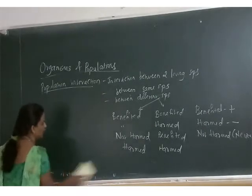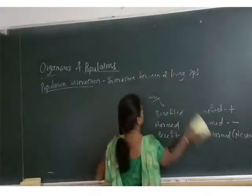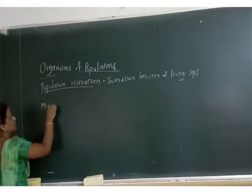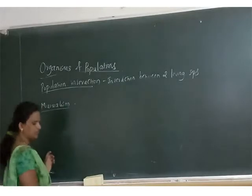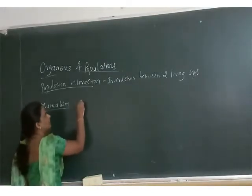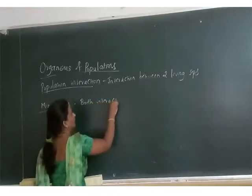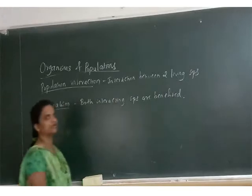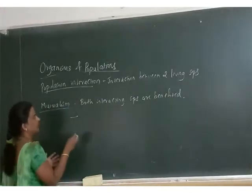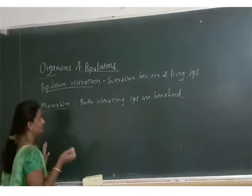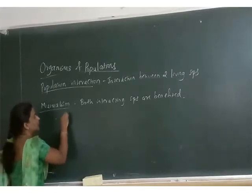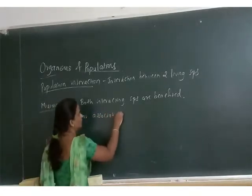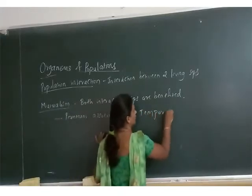Let's start with the first type - mutualism. In mutualism, both interacting species are benefited. Mutualism depends on two types of association: permanent association, also called formal association, and temporary association.